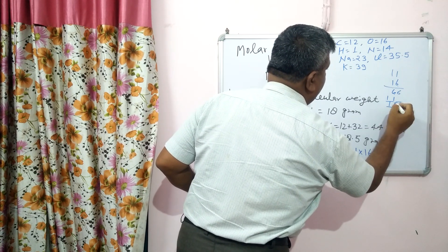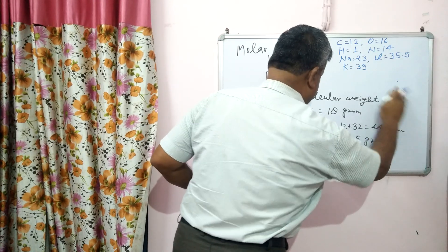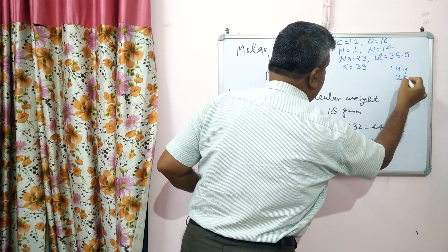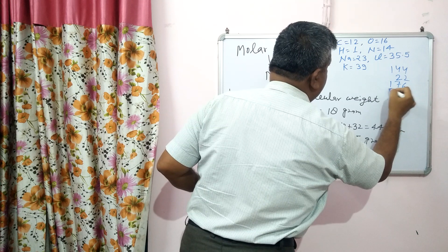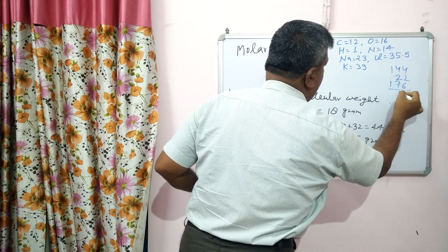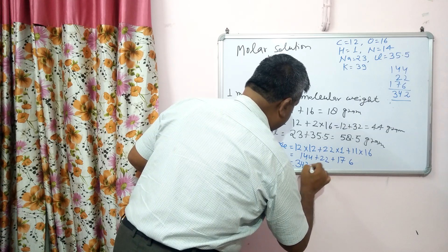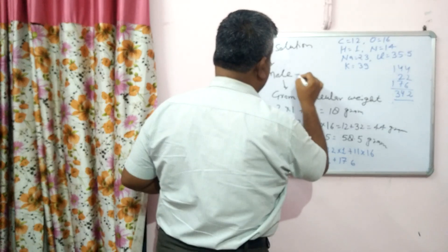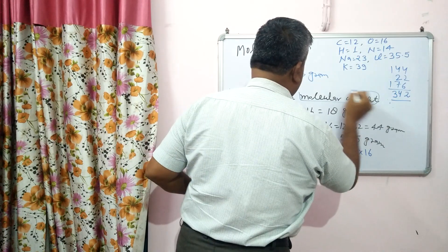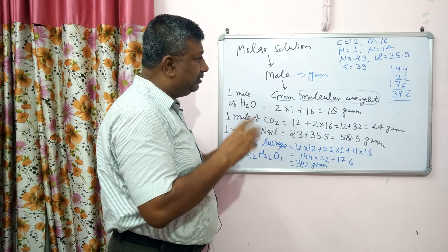So the oxygen contribution is 11 × 16 = 176. Adding them: 144 plus 22 plus 176 equals 342 grams. So 1 mole of sucrose is 342 grams. Since mole is expressed in grams, that is why it is called gram molecular weight. One mole is the molecular weight expressed in grams.